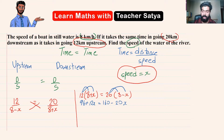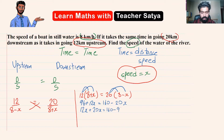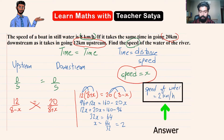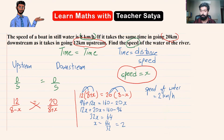Applying the distributive property: 96 plus 12x equals 160 minus 20x. Moving x terms together and constants together: 12x plus 20x equals 160 minus 96, so 32x equals 64, and x equals 64 over 32, which equals 2. Therefore, the speed of the stream is 2 kilometers per hour. Hope this opened up your mind on solving word problems. Click like, subscribe, and comment below for more!